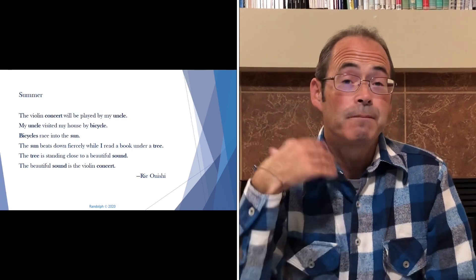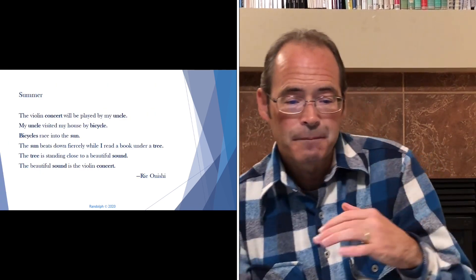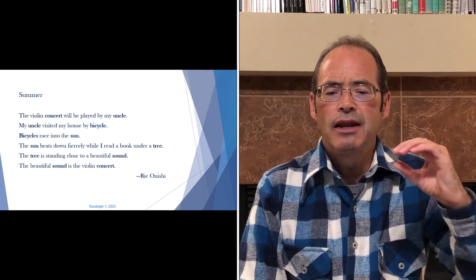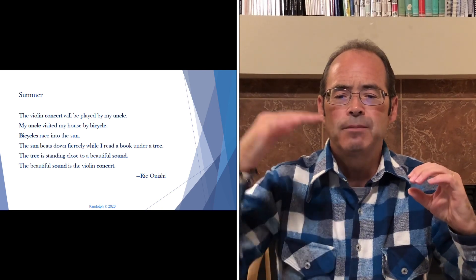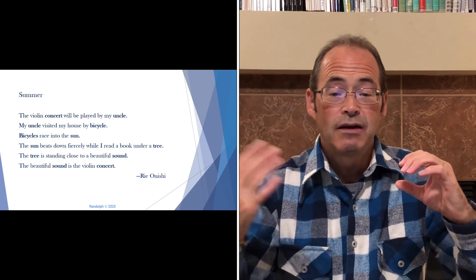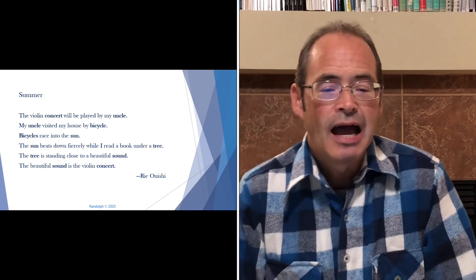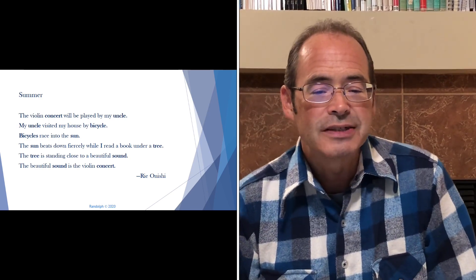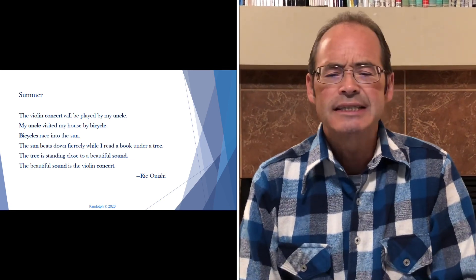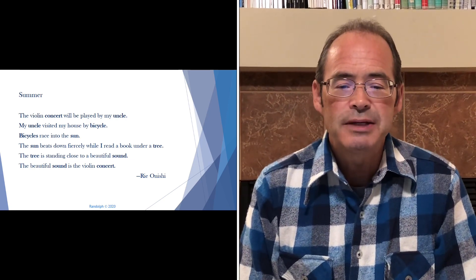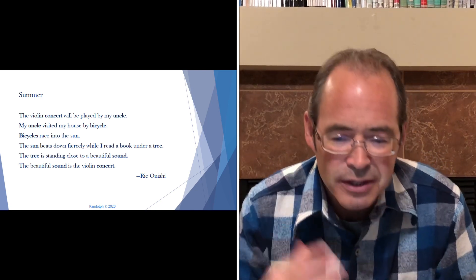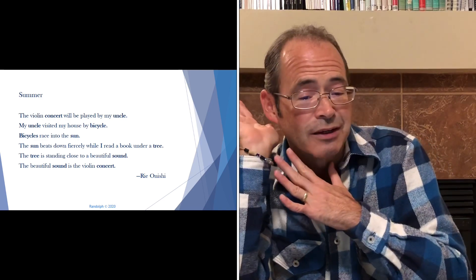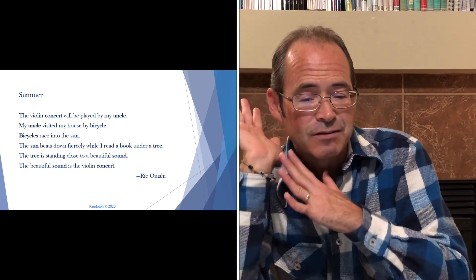Now that we've gone through that explanation, let me read the poem to you again. As we can see, the last line's first noun phrase comes from line five and ends with the first noun, which was 'concert.' Summer: The violin concert will be played by my uncle. / My uncle visited my house by bicycle. / Bicycles race into the sun. / The sun beats down fiercely while I read a book under a tree. / The tree is standing close to a beautiful sound. / The beautiful sound is the violin concert.